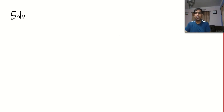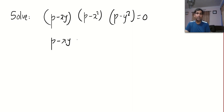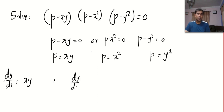Let us go for another question. Solve the differential equation: P minus xy, times P minus x squared, times P minus y squared, equals zero. The first thing to do is find the value of P. We get P minus xy equals 0, or P minus x squared equals 0, or P minus y squared equals 0 — so we get three values of P. Using the fact that P stands for dy by dx, we get three differential equations: dy by dx equals xy, dy by dx equals x squared, and dy by dx equals y squared.